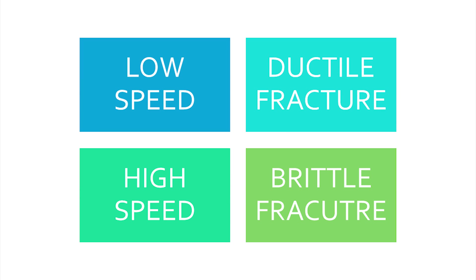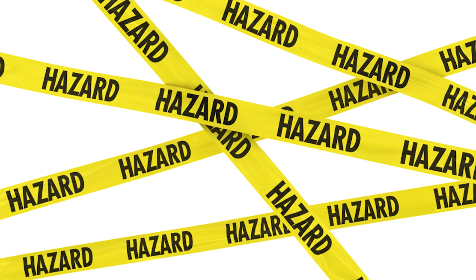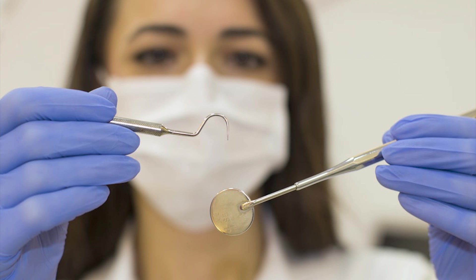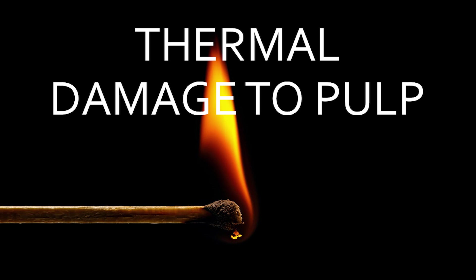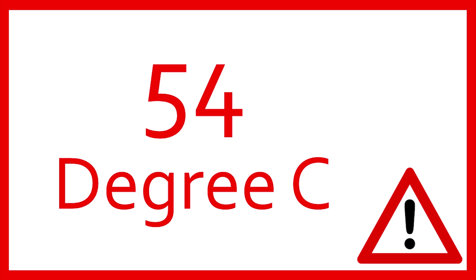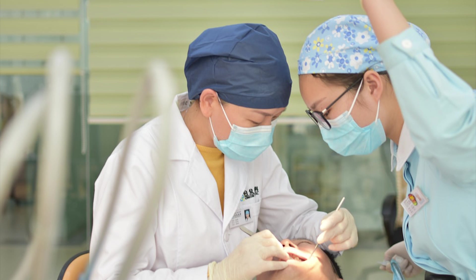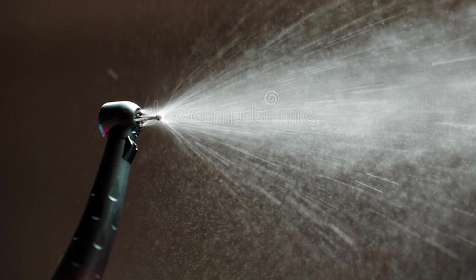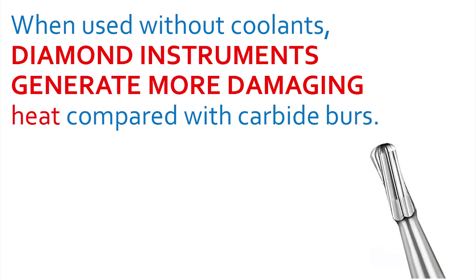Now let's cover the hazards associated with high speed dentistry. The first hazard is its ability to damage the pulp, because high speed cutting increases the temperature of the tooth. If the temperature increases more than 54 degrees Celsius, the pulp can undergo irreversible pulp necrosis. That's why you should always maintain a cutting temperature of less than 45 degrees Celsius, which is possible by using a water coolant. Carbide burrs are better for the pulp as they generate less heat compared to diamond abrasive instruments.